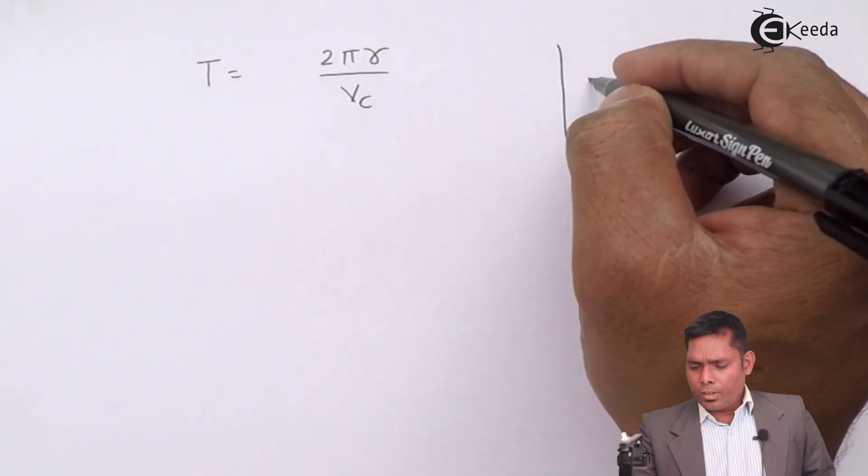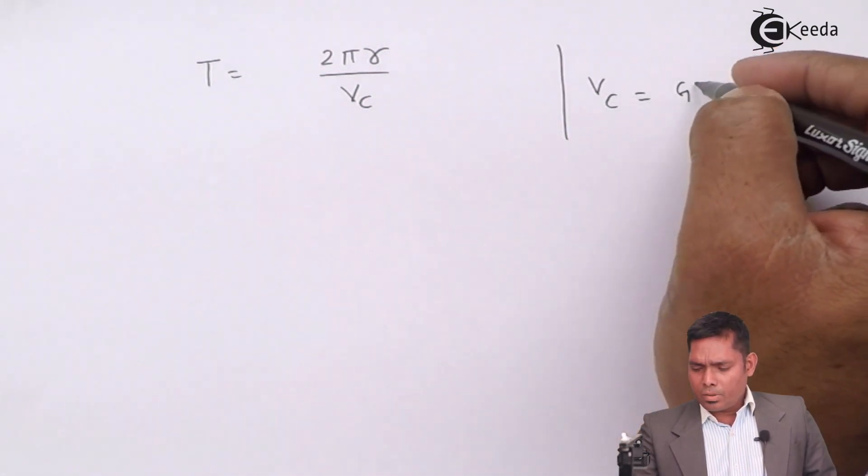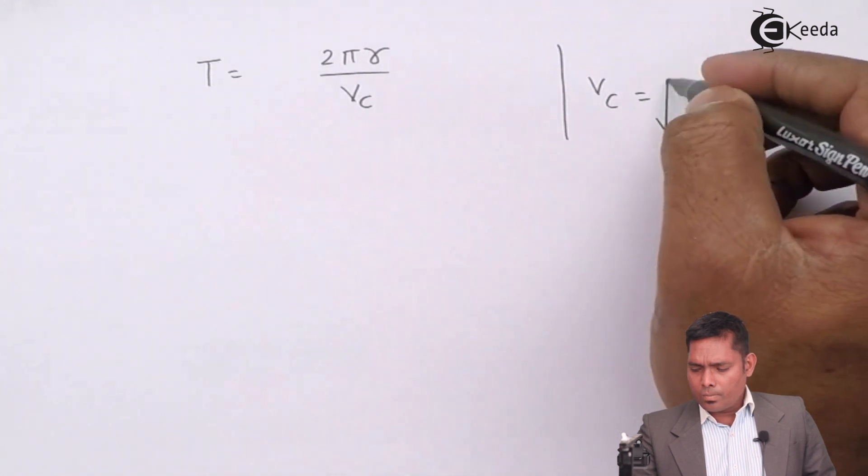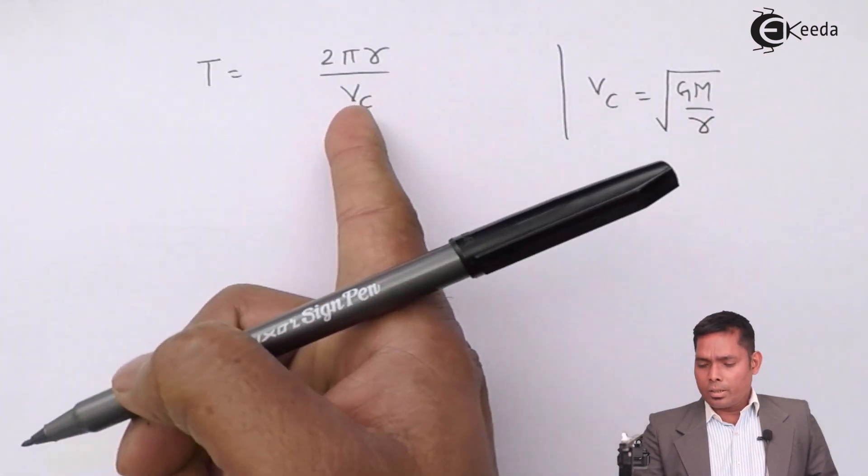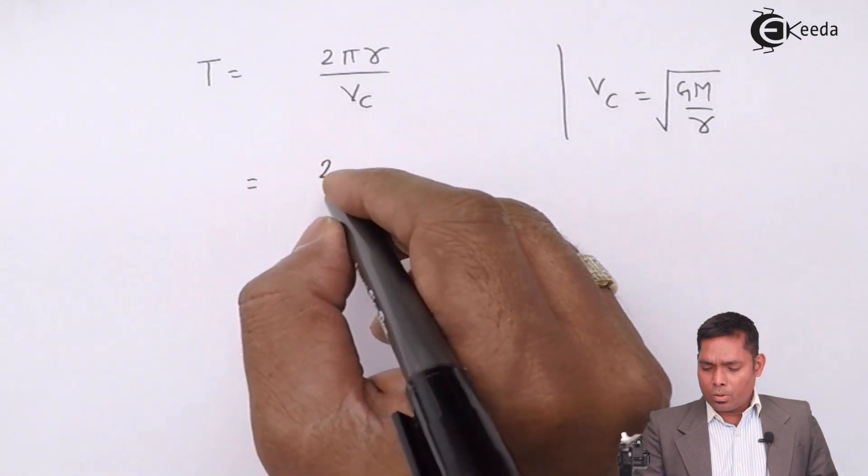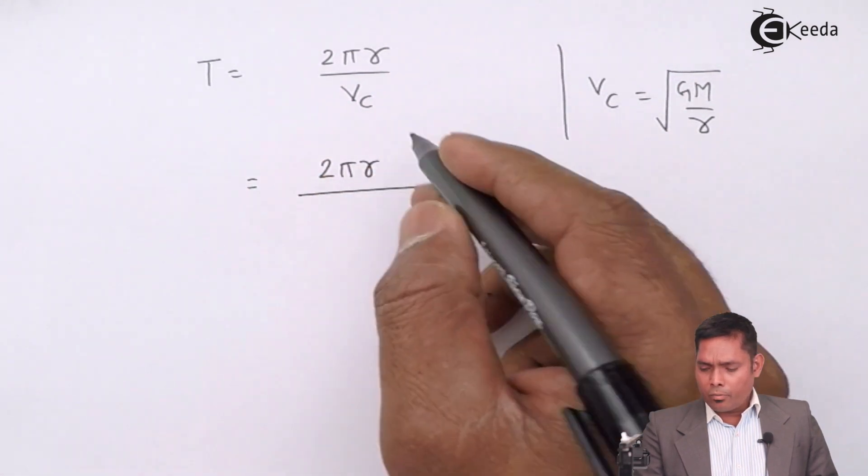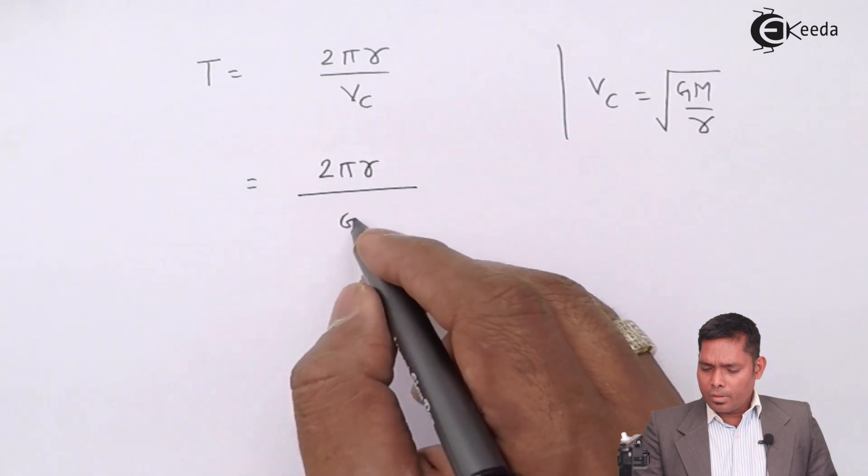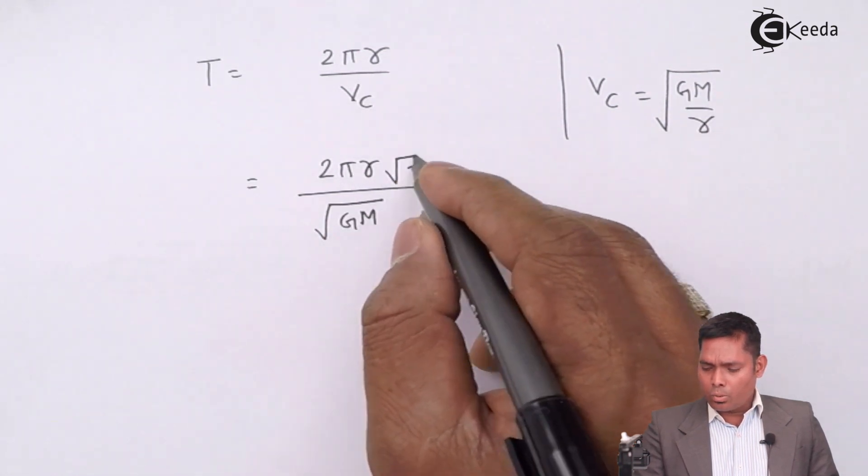What is vc? vc we got last time, it was under root gm over r. So I substitute this value over here, then I will get this expression comes out to be 2 pi r divided by vc, which comes out to be under root gm over r.